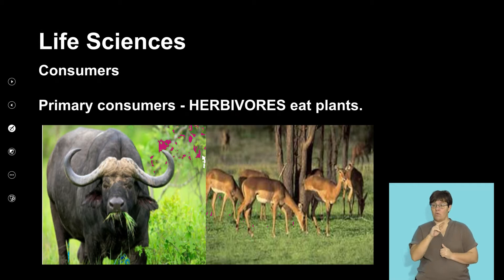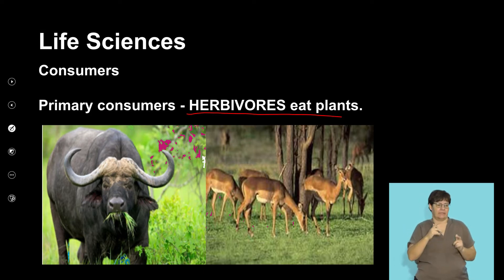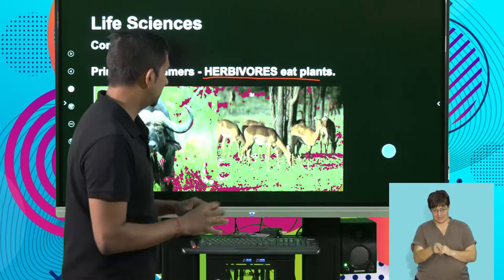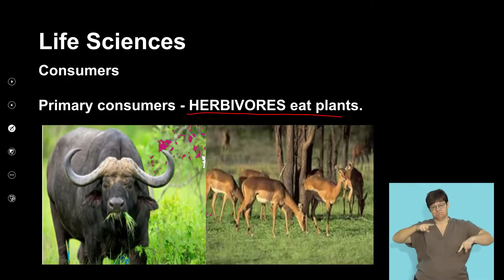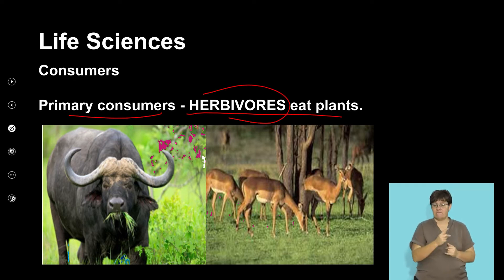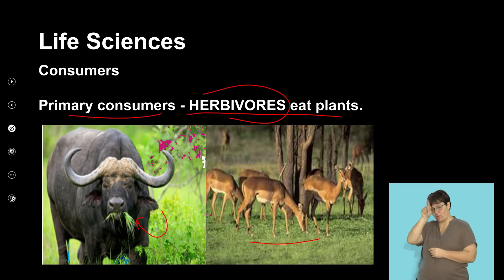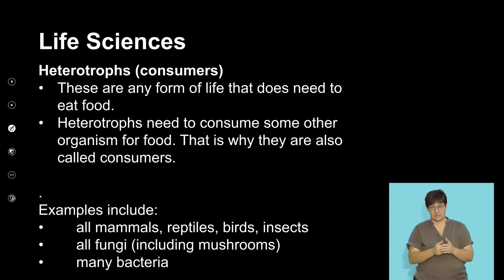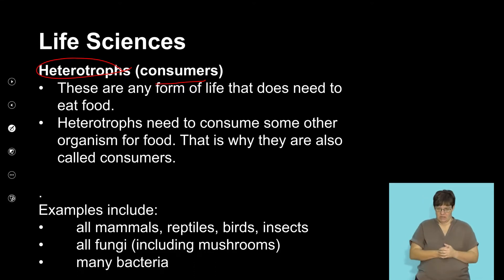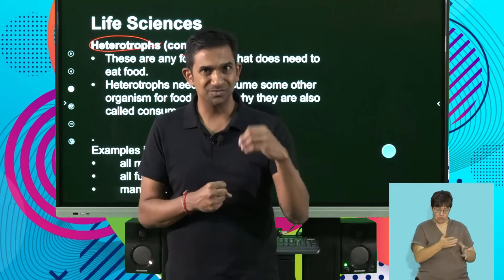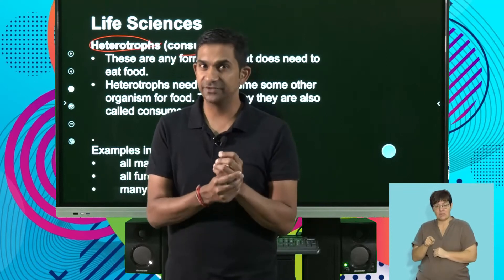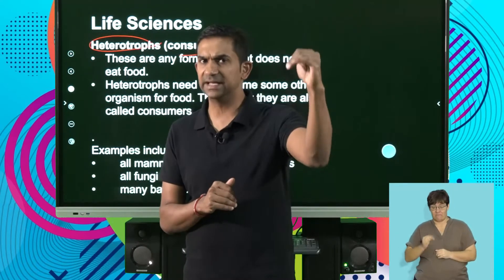Our herbivores, living in the context of the South African environment, include hooved animals or ungulates, which are predominantly a large group of animals that roam the savannas and grasslands, feeding on the grass. Biomes generally have a variety of different primary consumers or herbivores. Here we have a wonderful image of a wildebeest consuming grass, and some springbok consuming grass. The next group of consumers are those that eat other consumers — we refer to them as secondary consumers, the second level of consumers.